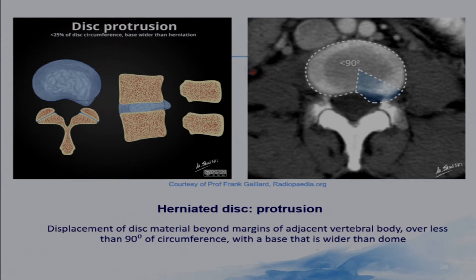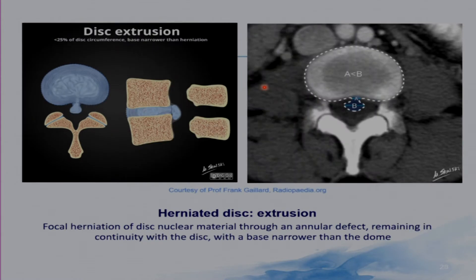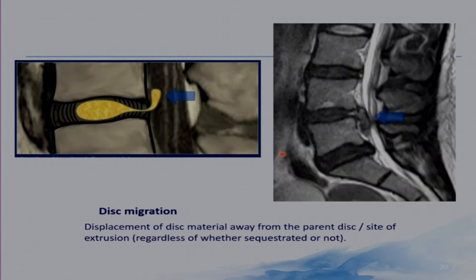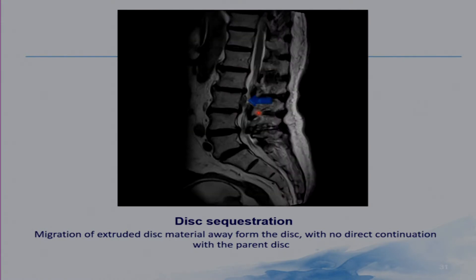A disc protrusion involves less than 25% of the disc circumference — that is, less than 90 degrees — and will have a broader base and a narrower dome. Disc extrusion, on the other hand, will have a wider dome and a narrower base. That is an example of a disc extrusion. Disc migration is displacement of disc material away from the parent disc. In disc sequestration, the migrated disc loses its direct continuation with the parent disc — essentially a free disc fragment, as seen on this MRI study.